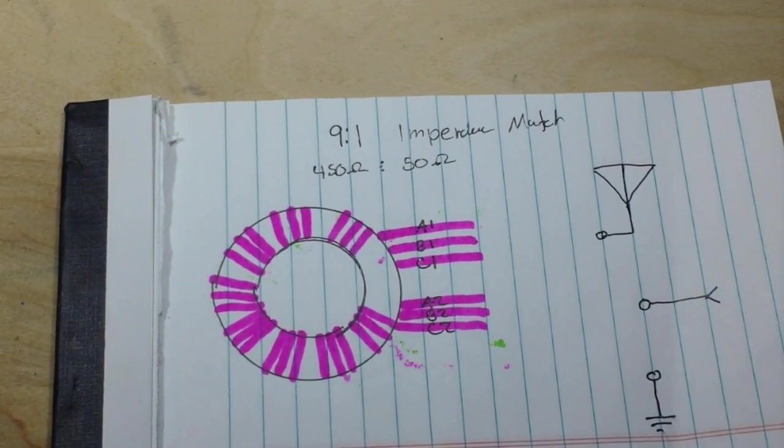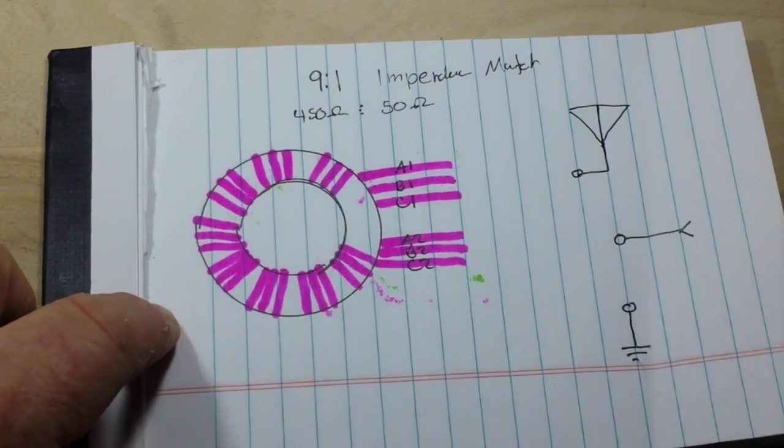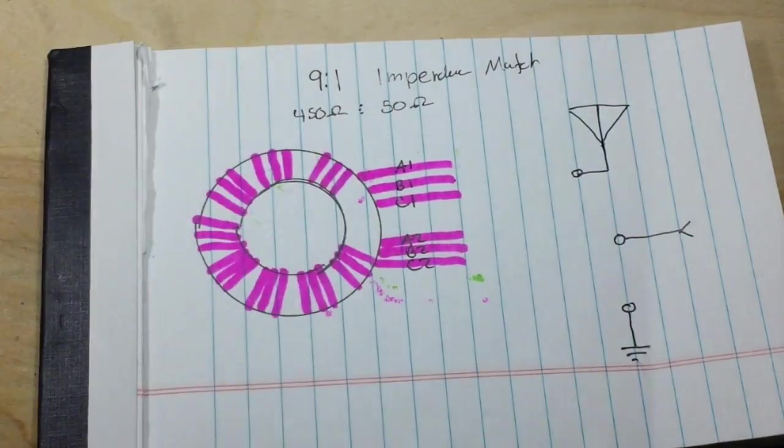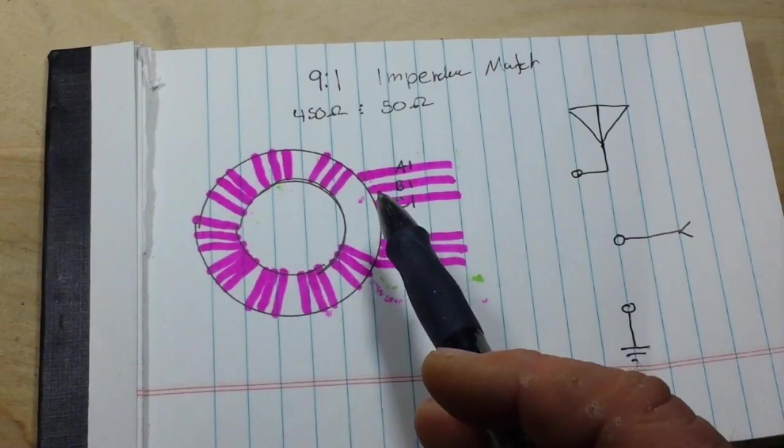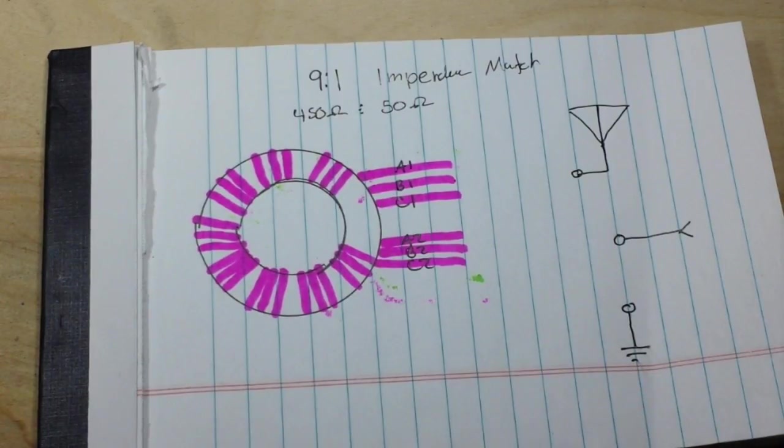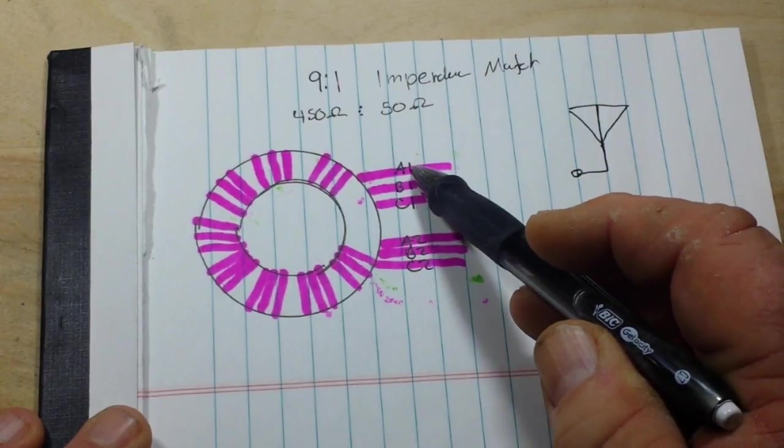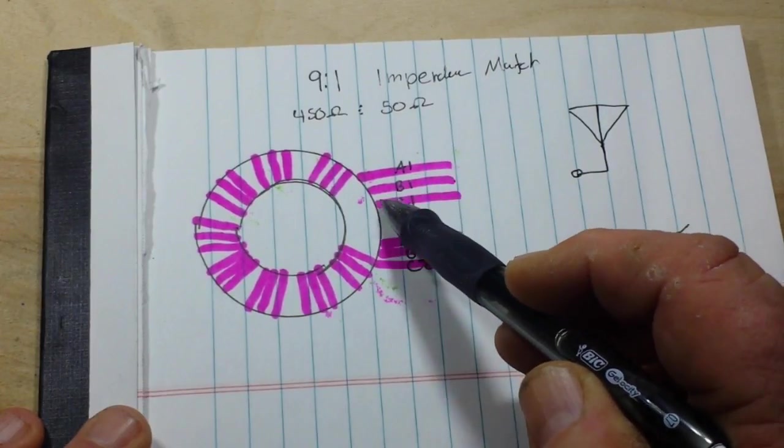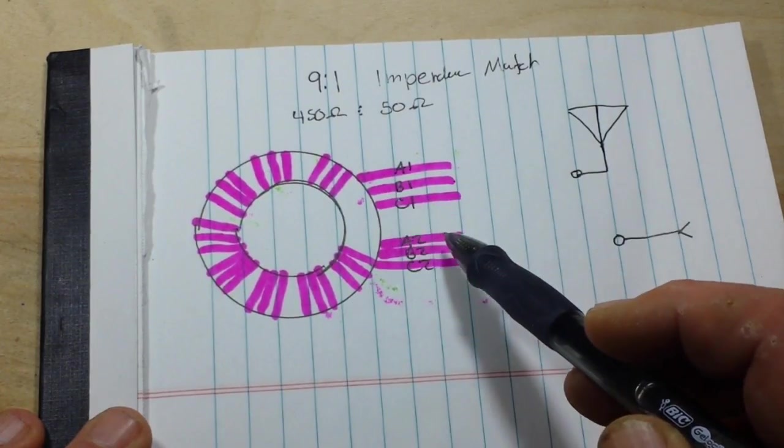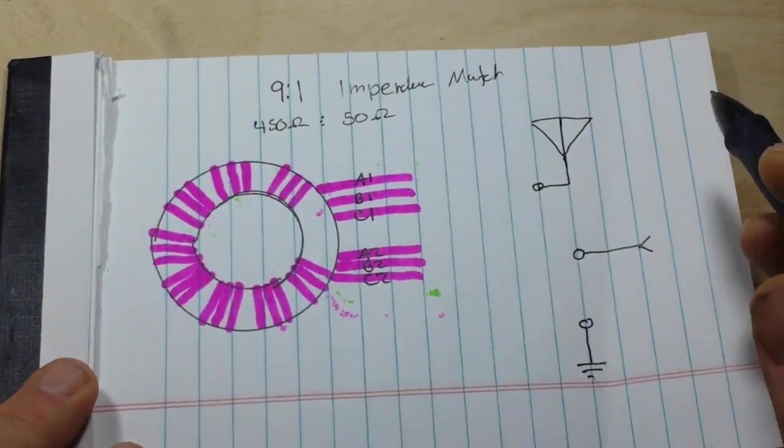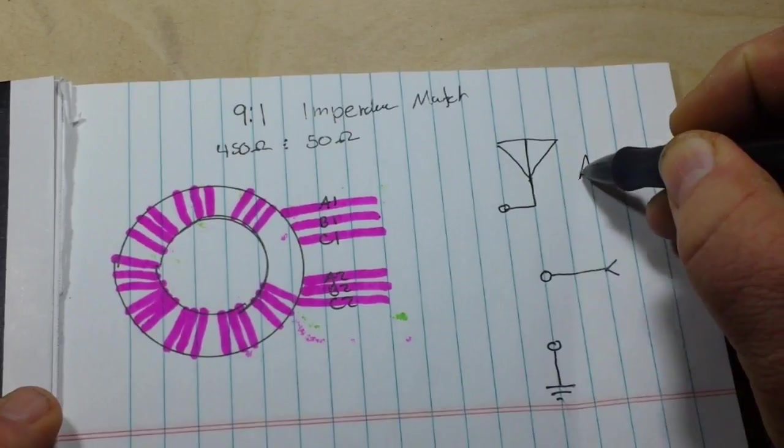In this case, that would be like a radio or something like that. We have our toroid, and it's going to get nine windings of three separate wires. Just to make it easy, we'll label them A1, B1, and C1 where the windings begin, and A2, B2, and C2 where they end.